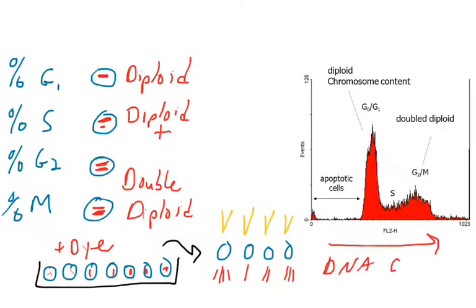Cells are sent through this machine and basically the glowingness, the brightness, the fluorescence is measured for each and every cell. On the x-axis of this figure, you'll see dye intensity.